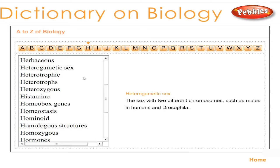Heterogametic sex: the sex with two different sex chromosomes, such as males in humans and Drosophila.